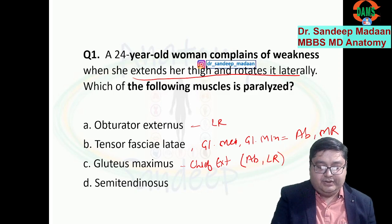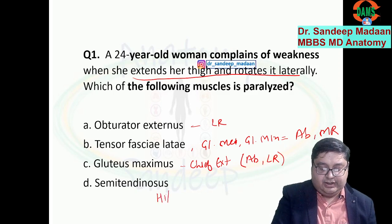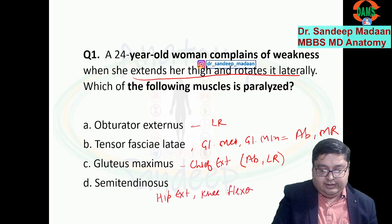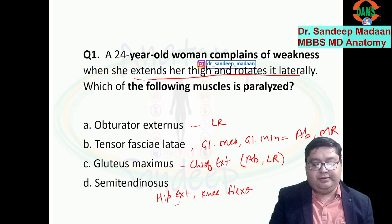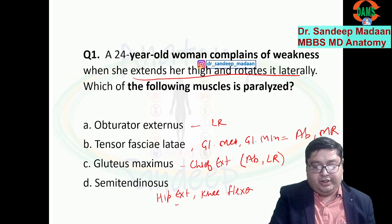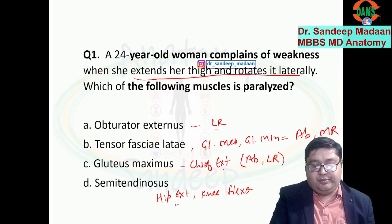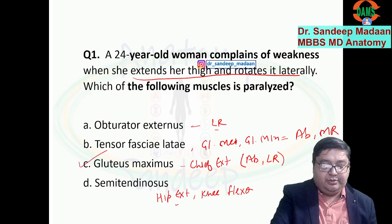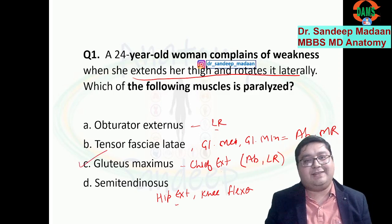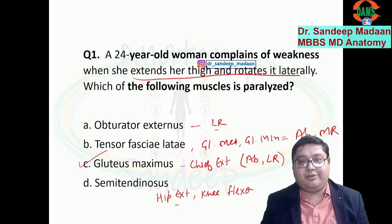Semitendinosus is the hip extensor on a regular basis and also a knee flexor, so it can justify hip extension. Obturator externus can justify lateral rotation, but both actions can be justified by gluteus maximus. That will be our answer.